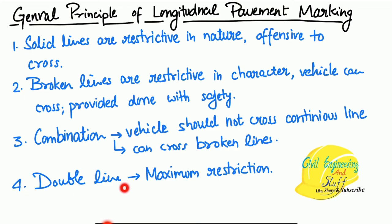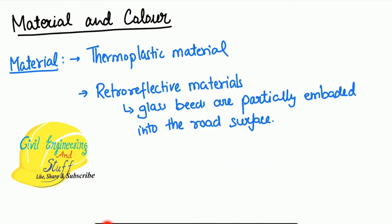We have solid lines, broken lines, a combination of solid and broken lines, and double lines. The materials these markings are made of are thermoplastic material and also retro-reflective materials containing glass beads, which reflect light, especially in night conditions.